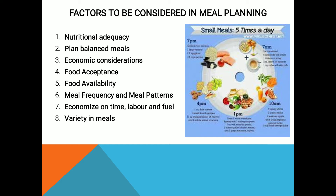Ye nimn prakar se hain. Pehla factor hai nutritional adequacy — poshtik avashyaktaon ka dhyan rakhna. Second factor is planned balanced meal — santulit aahar ki yojana banana. Teesra factor hai economic consideration — financial cheezon, vittiya karakon ko dhyan mein rakhna, food budget ko dhyan mein rakhna. Fourth is food acceptance — vyakti vishesh ki food ko svikriti. Fifth factor is food availability — food ke raw materials local market mein available hain ya nahin. Sixth factor is meal frequency and meal patterns — kitni baar diet leta hai vyakti din mein tatha uska meal pattern. And seventh is economize on time, labor and fuel — samay, mehnat evam indhan ki bachat karna — tatha variety in meals, yaani ki aahaaron mein vibhinnata pradhan karna.